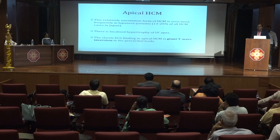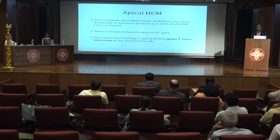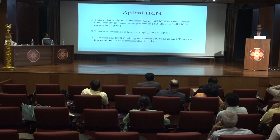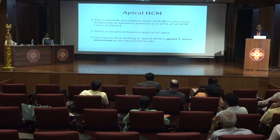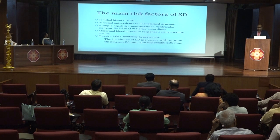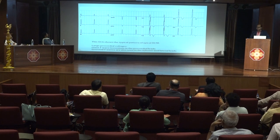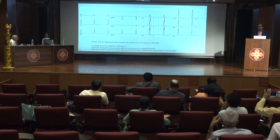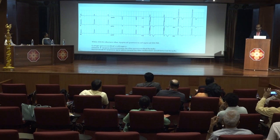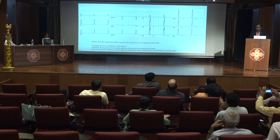Apical HCM is a relatively uncommon form of hypertrophic cardiomyopathy. It is seen more commonly in Japanese patients and is characterized by localized hypertrophy of the LV apex. The classical ECG finding of apical HCM is giant T wave inversion in the precordial leads. In this typical ECG of an apical HCM patient, we see voltage criteria matching for LVH and deep T wave inversions in all precordial leads from V2 to V6.